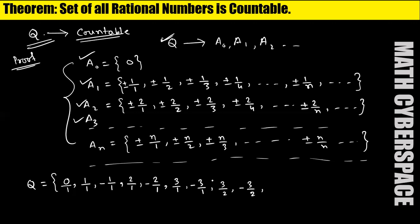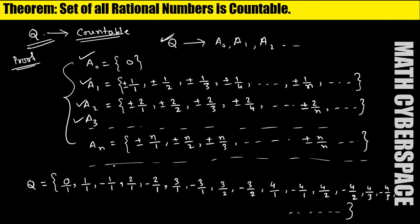Increase the numerator again: 4/1 and −4/1. Then 4/2 and −4/2 — but 4/2 equals one-half and −4/2 equals minus one-half, which are already elements of A1, so we skip them. Then 4/3 and −4/3, and 4/4 — which equals 1 again — and −4/4, which equals −1. In this way, we can arrange all elements from A0 to infinity.